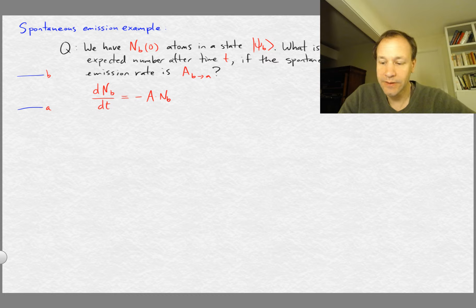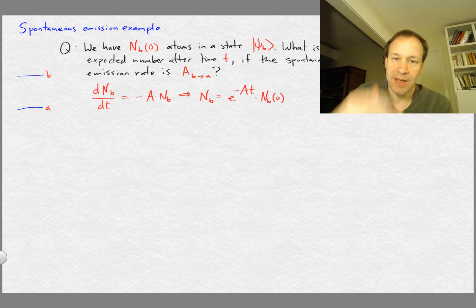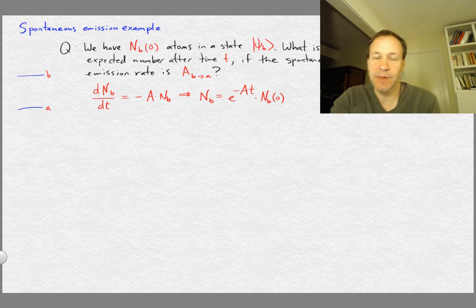And that's a very simple differential equation. So we can solve that and that gives us the exponential function. So this is n_b equals e to the minus A t times a constant, which is going to be n_b of zero. So that's the answer.